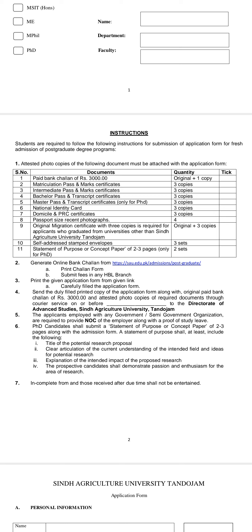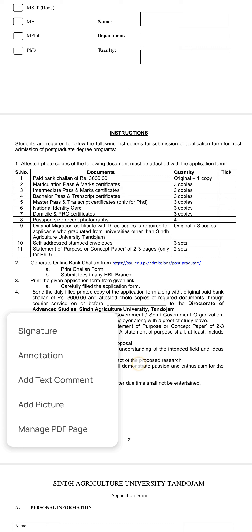Additional required documents include: Master's pass certificate and transcript (three copies), National Identity Card (three copies), four recent passport-size photographs, and an original migration certificate with three copies. The migration certificate is specifically required for applicants who completed their bachelor's or graduation degree from an institution other than Sindh Agriculture University, Tando Jam.